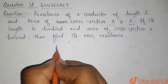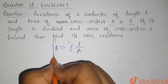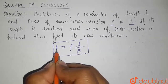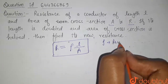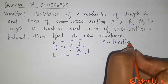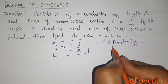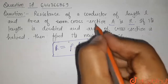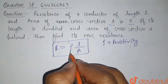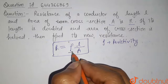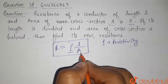So we have the resistance R equals to Rho into L by A. This is the relation for resistance with resistivity. Here Rho is the resistivity and it is the property of material, so it does not change for any particular material. We are not changing the material of the conductor, so Rho will remain the same. L is the length of the conductor and A is the area of cross section.